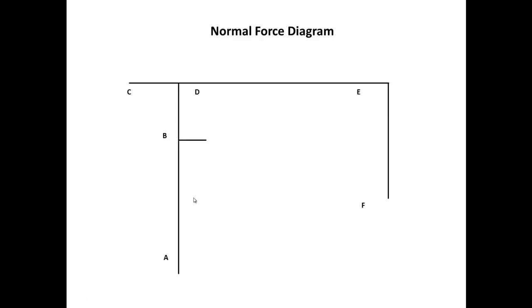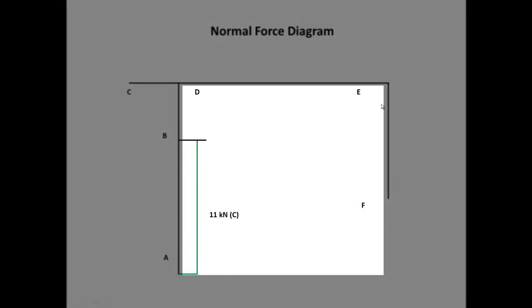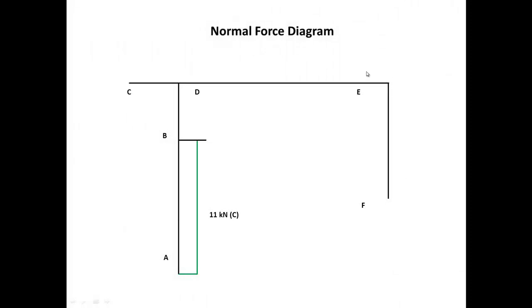Now we are ready to put all the pieces together and draw the whole frame. For the normal force diagram, you take the diagrams drawn for each member and assemble them into the general frame. Try to keep negative values on the inside of the frame and positive values on the outside as a sign convention. So: 11 kN compression in AB, no forces in BB prime, 9 kN compression in BD, no forces in CD or DE, and a compression force of 3 in member EF.